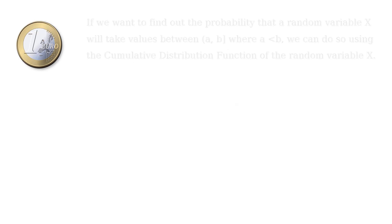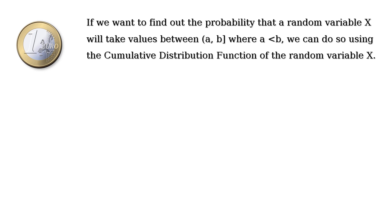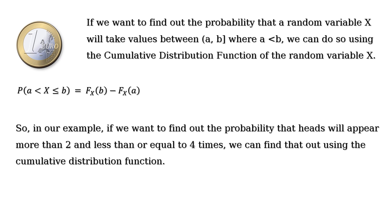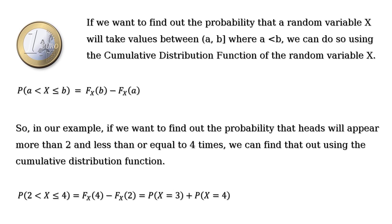If we want to find the probability that a random variable X will take values between a and b, where a < b, we can use the cumulative distribution function. P(a < X ≤ b) = F(b) − F(a). For example, the probability that heads appear more than 2 and at most 4 times is P(2 < X ≤ 4) = F(4) − F(2) = P(X=3) + P(X=4).